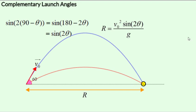The formula for the range is v0 squared times sine of 2 theta over g. Now for theta, if we substitute 90 minus theta, then for sine of 2 theta, we would get sine of 180 minus 2 theta, which again is sine of 2 theta.